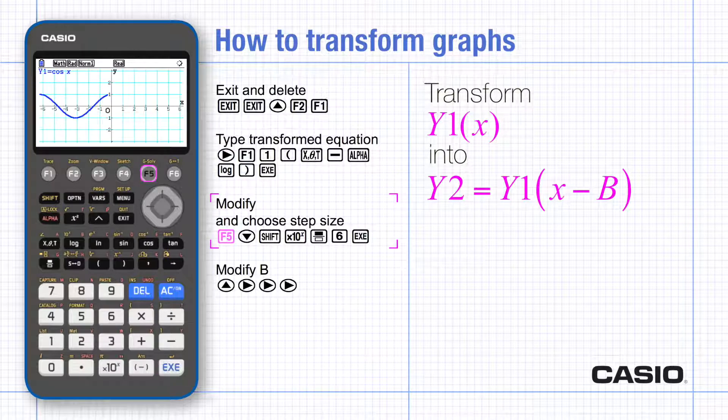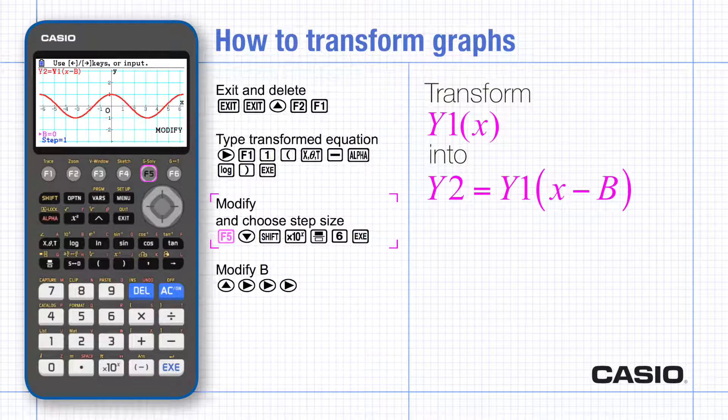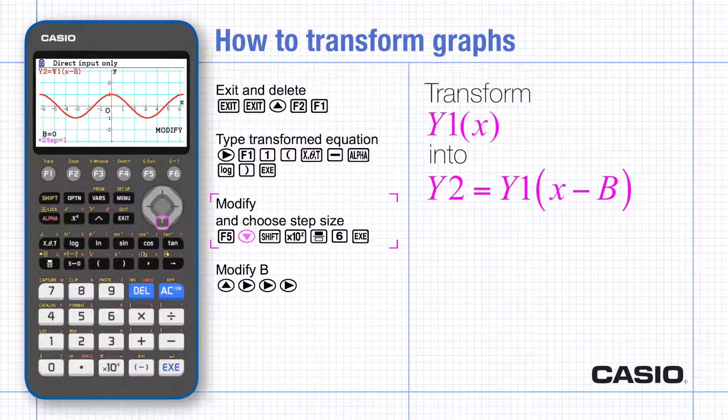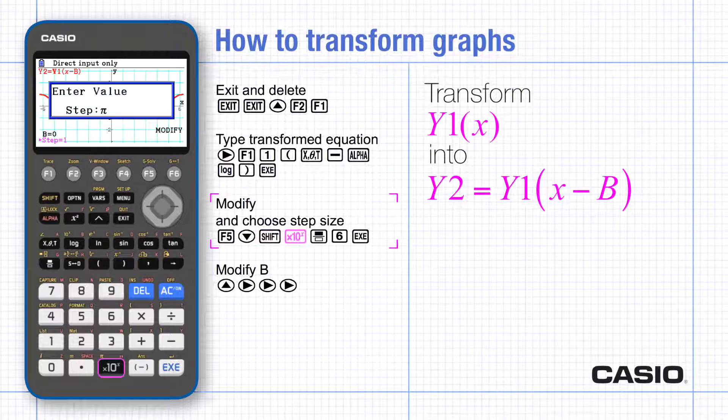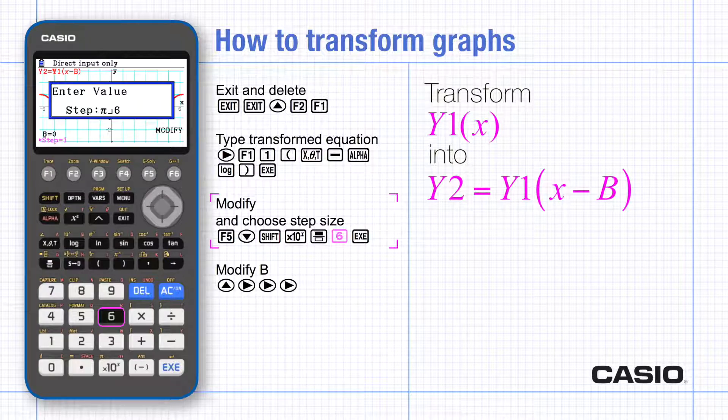Press modify and change the step size to pi over 6. Notice the fraction notation that the calculator uses in this mode.